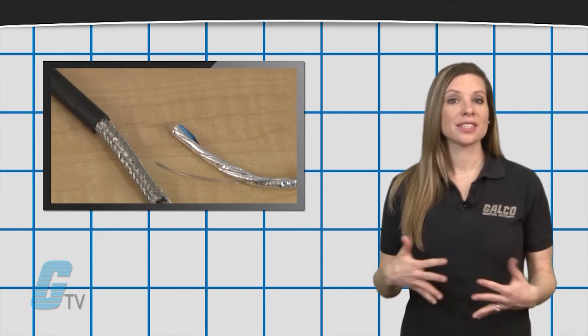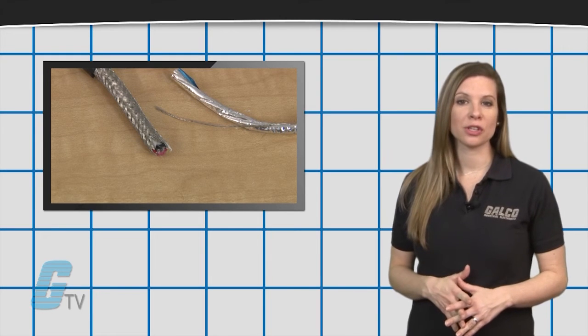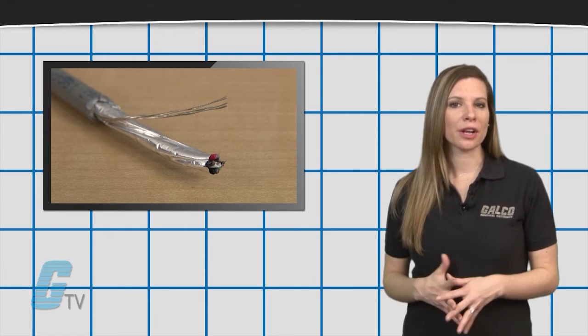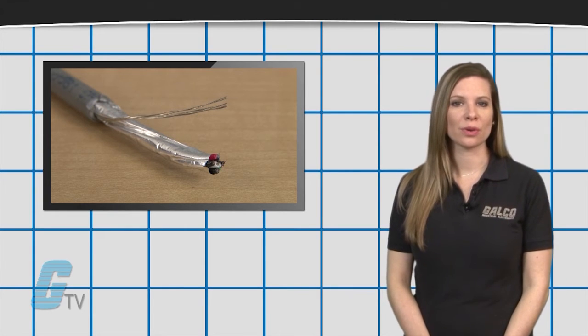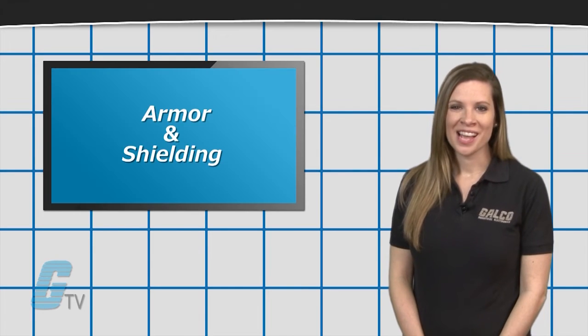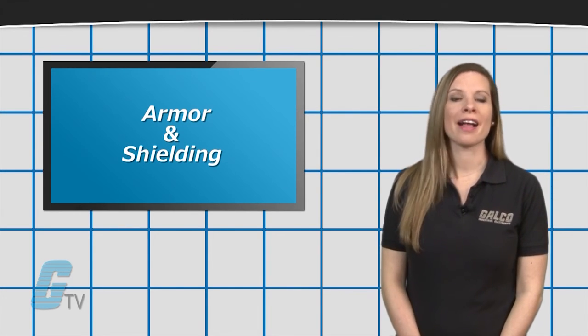On the other hand, shielding is incorporated within the inner layers of the wire around the conductor. It works to minimize electromagnetic interference and prevents the wire from intercepting outside currents or signals that could damage its productivity. Armor and shielding can also be used together if it is required by the application.